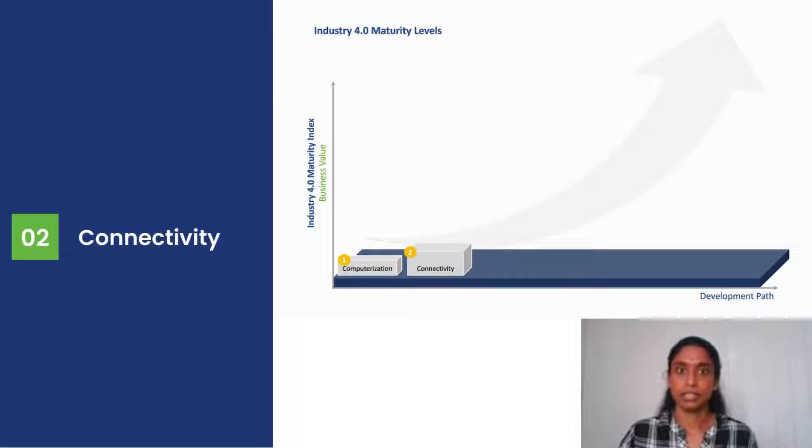The second level is termed as Connectivity. Connectivity is the level where the organization is using a few systems, systems like Excel for data entry and ERP for other function processes.